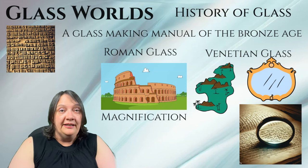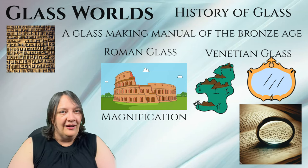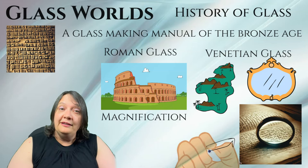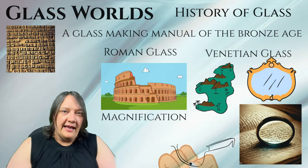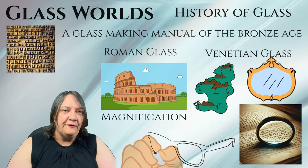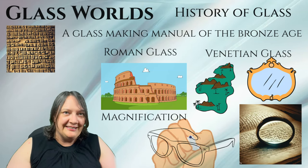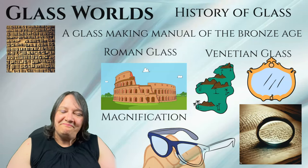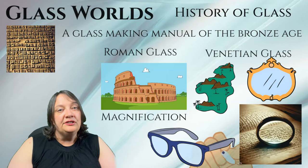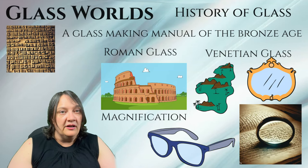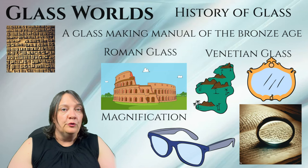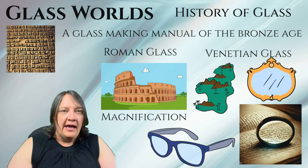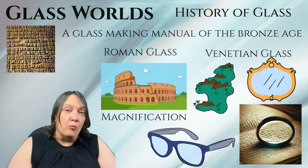Of course you could skip reading stones and go for spectacles or eyeglasses instead. These were invented somewhere in the late 13th century, with the earliest evidence coming from Italy — specifically the region around Florence, Pisa and Venice, which makes sense with Murano right there. Early spectacles were of a simple design consisting of two convex lenses for correcting far-sightedness, mounted in frames made of bone, metal or leather. The frames were either hand-held or balanced on the nose, as they lacked the side arms that hook behind the ears of modern spectacles.